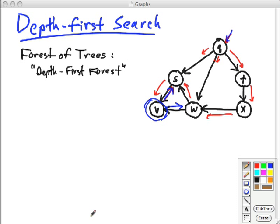As you may recall, a forest of trees is really just a set of trees. They are disjoint from each other, and we'll see many examples of that later.